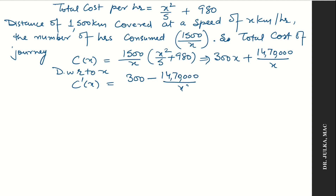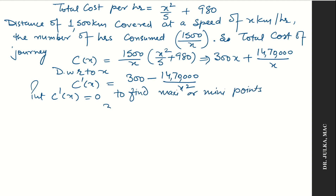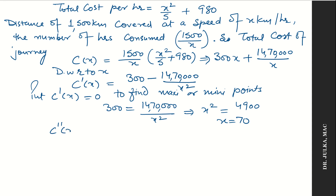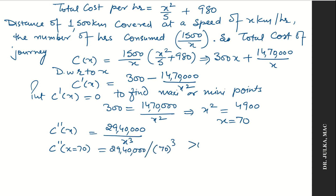To find the minimum cost, we differentiate with respect to X. So C'(X) = 300 − 14,70,000/X². Setting C'(X) = 0 gives 300 = 14,70,000/X², so X² = 4900, and taking the square root gives X = 70. The second derivative equals 29,40,000/X³, which at X = 70 is positive.